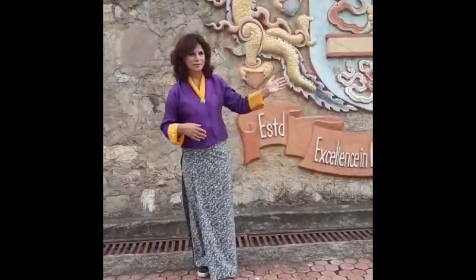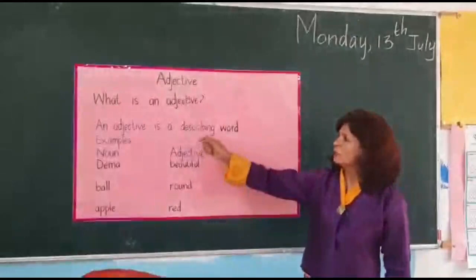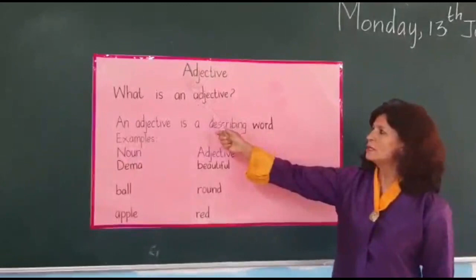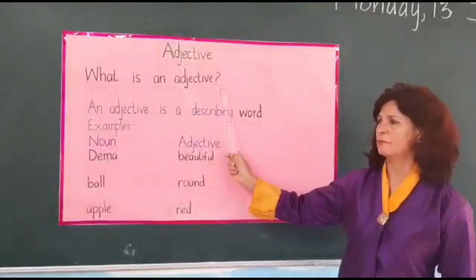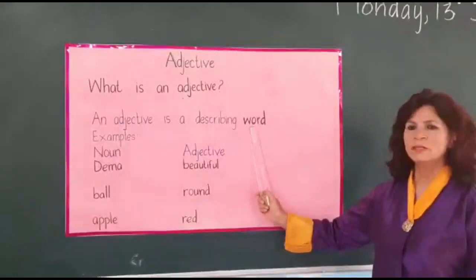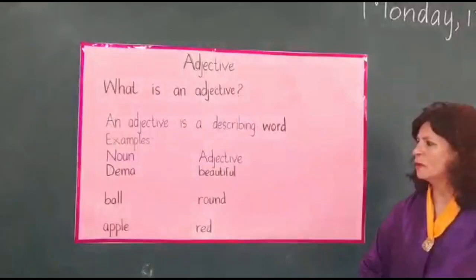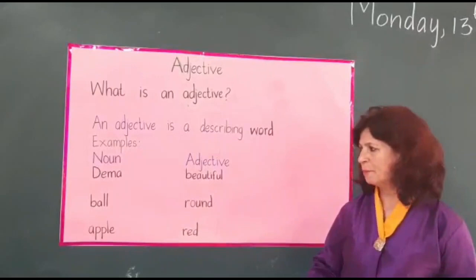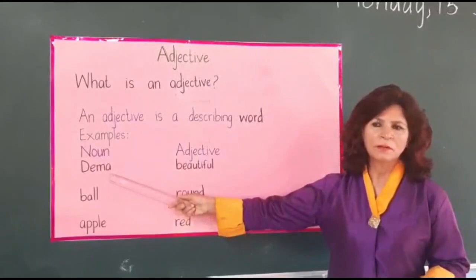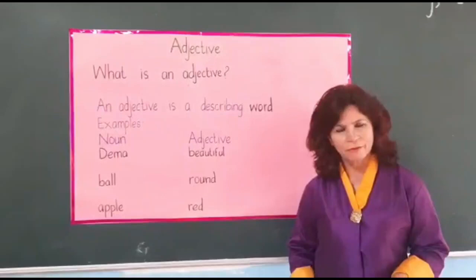Okay children, now just look at the board here. I have the topic here. We are going to learn adjective. An adjective is a describing word. Look at the examples here — noun and adjective — because adjective describes a noun. For example, look here: Dema. Dema is the name of a girl. It's a noun. And beautiful is an adjective.